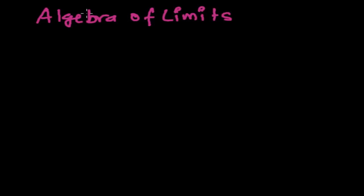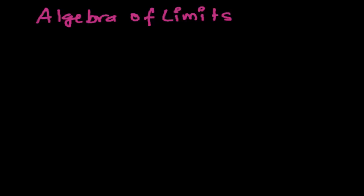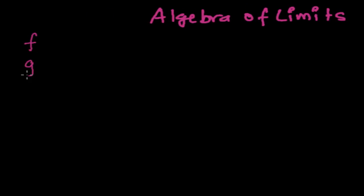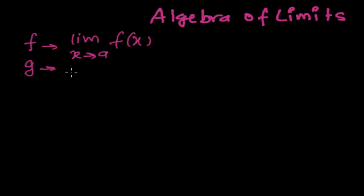Algebra of limits means we can apply subtraction, addition, and multiplication — all these things — in limits as well. Before learning the algebra of limits, let me suppose there are two functions, f and g, and both have the existence of a limit. Suppose the limit as x tends to a of f(x) exists, and for g(x) also, the limit as x tends to a of g(x) exists.